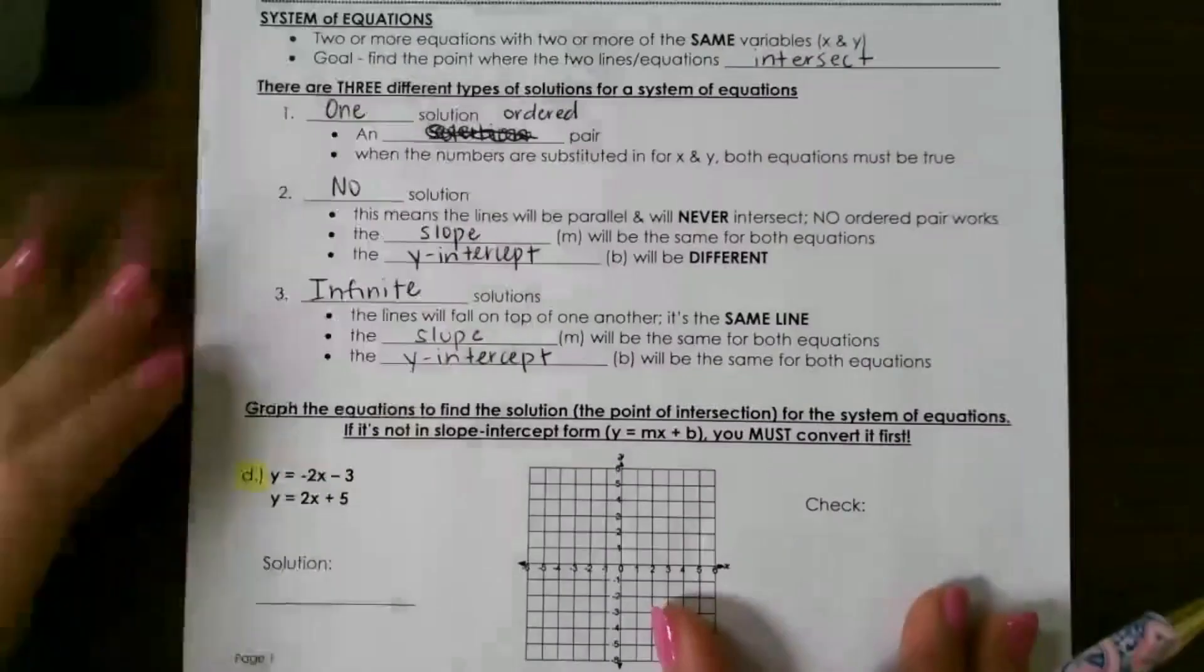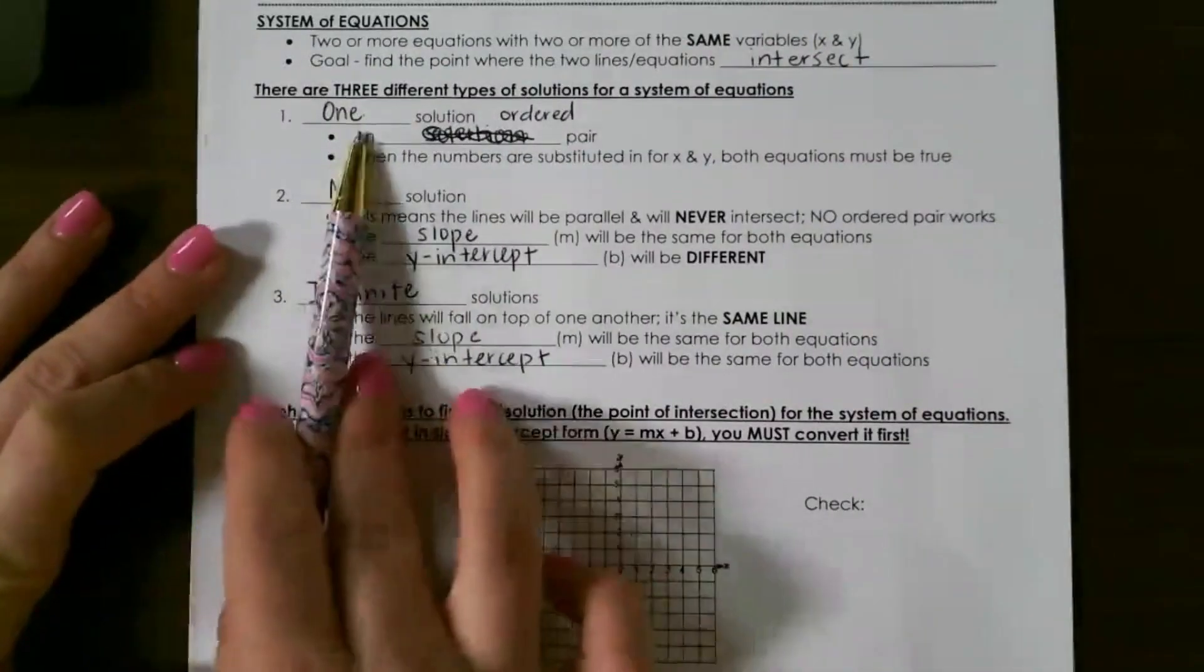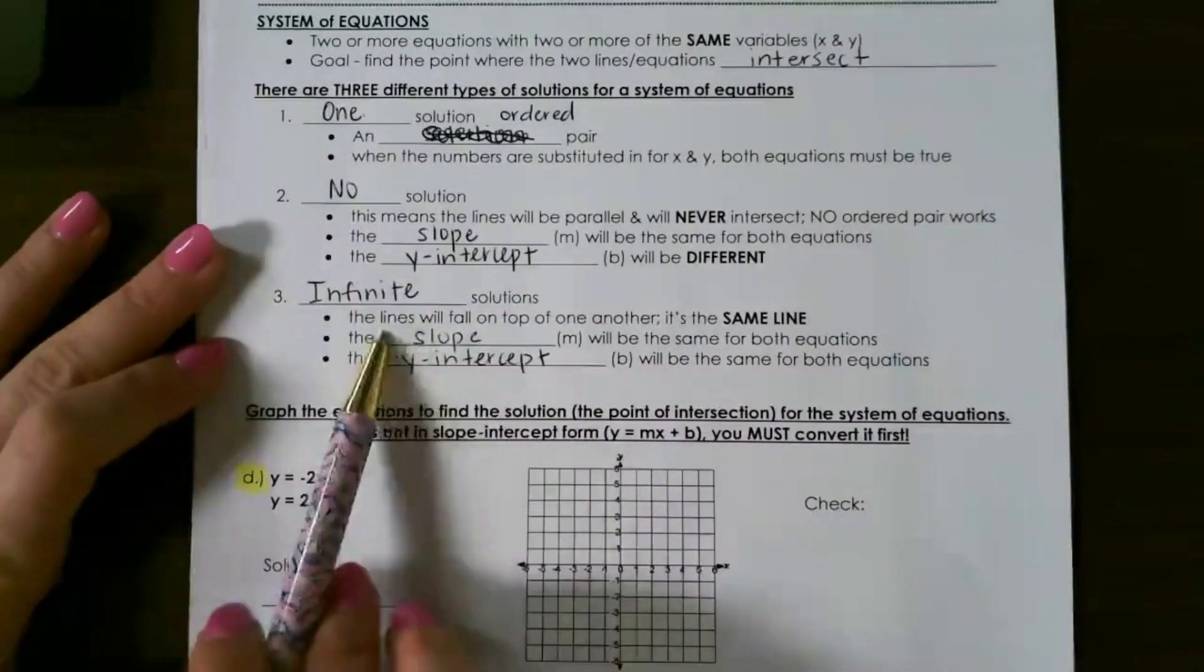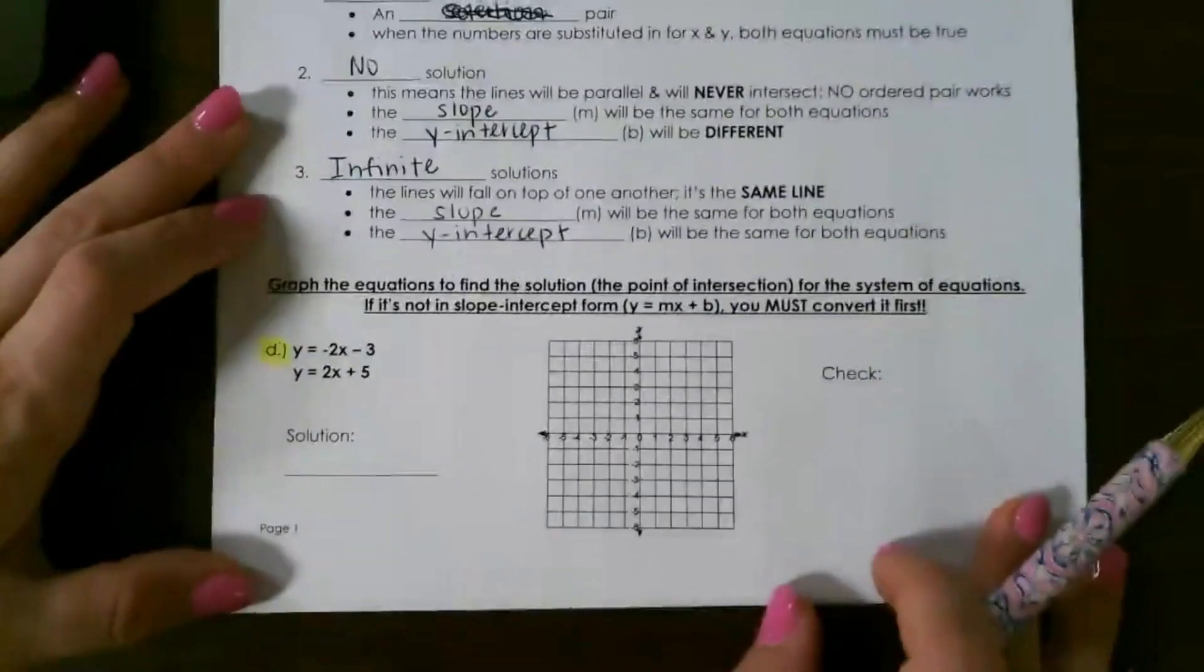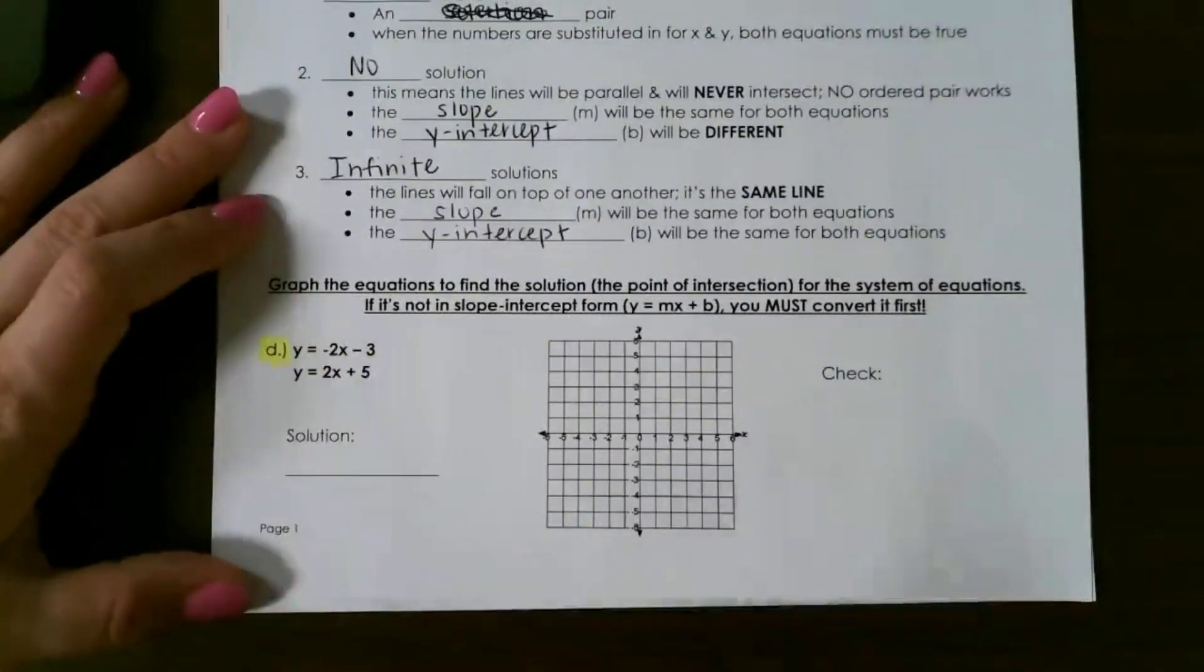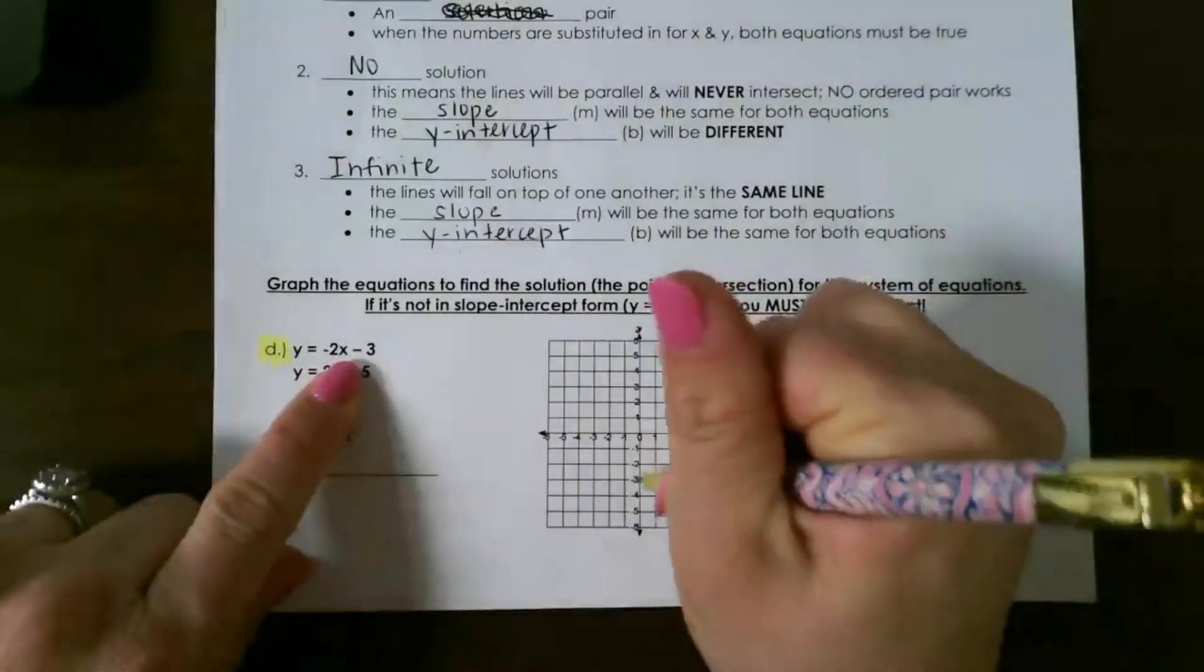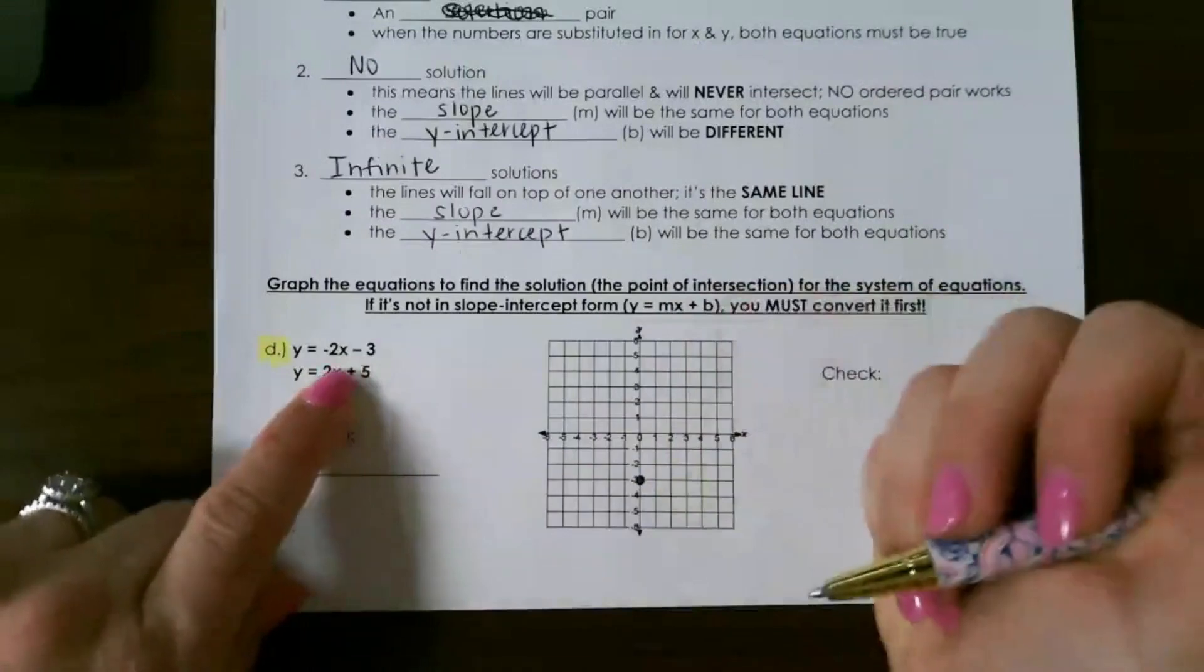Let's look at a couple of examples. We're going to look at one of each: one with one solution, one with no solution, and one with infinite. Our first one is already in slope intercept form, so I just have to graph it. The first one I start my point at negative three.